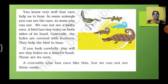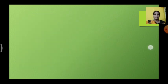They help to hear the noise. If you look carefully, you will see tiny holes on the lizard's head. There are its ears. A crocodile also has ears like this, but we cannot see them easily. So they all have ears we can't see because it is very tiny.